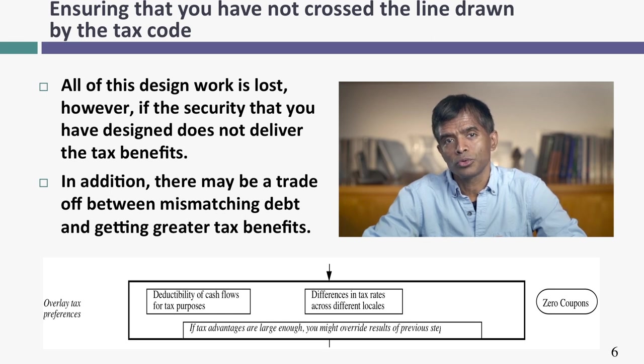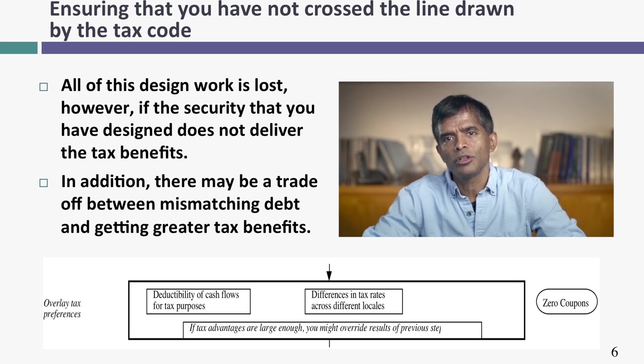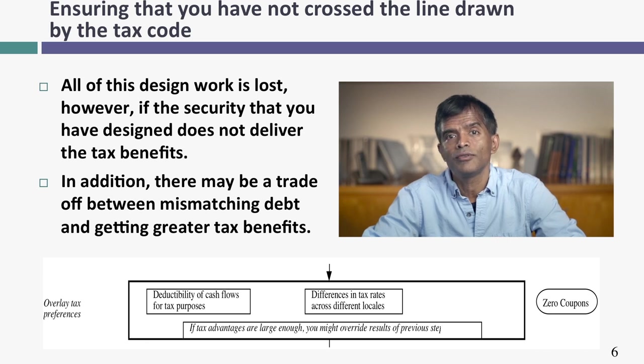So that's the first step in bond design: start with the business you're trying to finance and match up the debt to the characteristics of that business. Here's your second step: make sure you haven't been too clever for your own good. In the previous step, you were trying to design debt that started to look like equity. You might have done such a good job that the tax authority might look at the security and say, 'Hey, that looks so much like equity — we're going to treat it as equity,' in which case all your hard work has gone down the drain. So the second step is to make sure the security will still get you the tax advantages of debt, and at this stage you might add some special features or massage the debt to maximize your tax benefits.